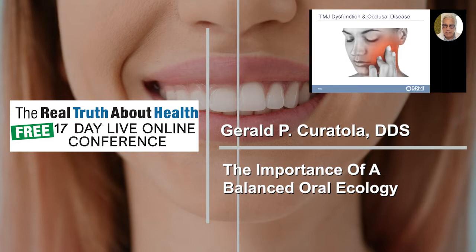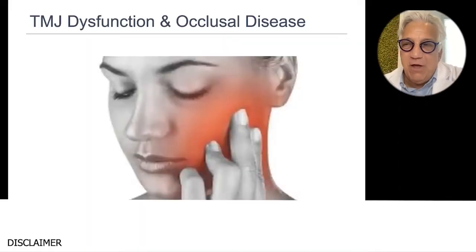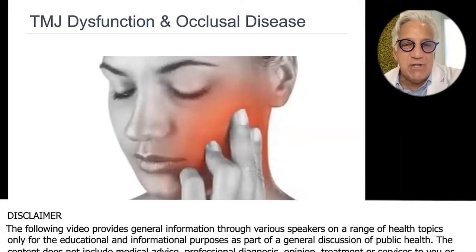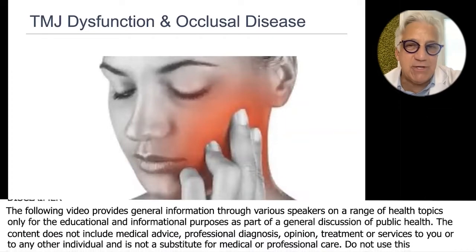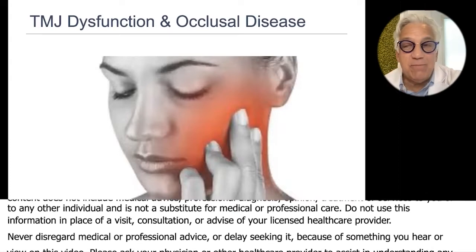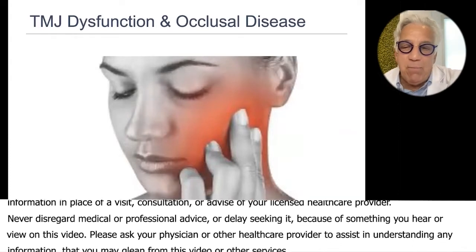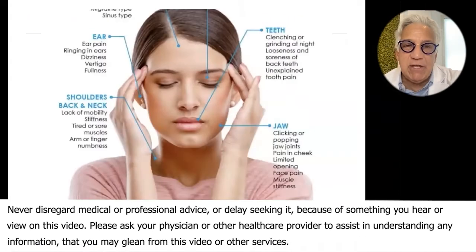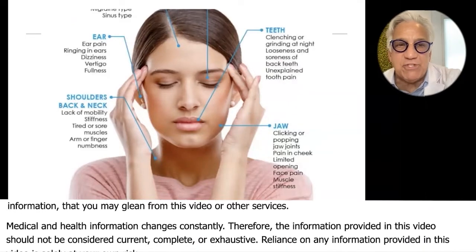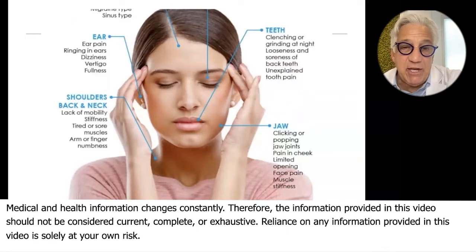TMJ and occlusal disease — about 80% of TMJ has to do with the dental arch. Other TMJ causes could be car accidents, a torn joint, or damage or disease in the meniscal disc, but those are rarer. Most of it is the bite, and it manifests in many different ways, from sinus pain to tinnitus.